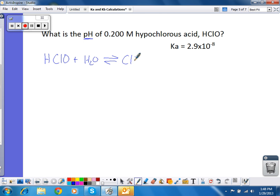And this is going to give me hypochlorite ion and hydronium. I still have a K expression. And I'm going to do an ICE table for this. That goes away.